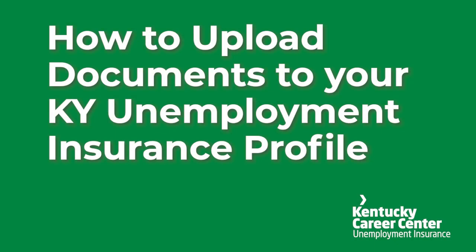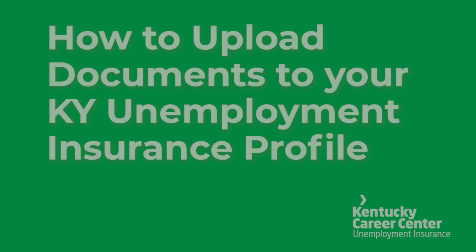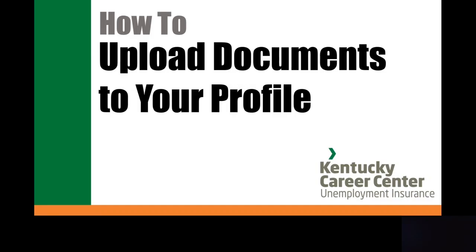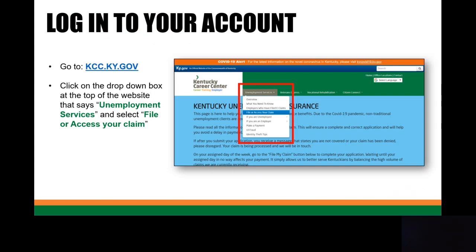Hello and thank you for joining me today on how to upload a document to your Kentucky Unemployment Insurance profile. To begin the process, you'll need to log into your account by going to www.kcc.ky.gov. Click on the drop-down box at the top of the website that says Unemployment Services and then select File or Access Your Claim.